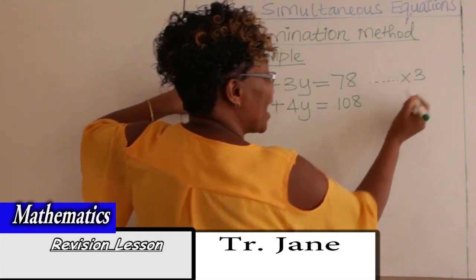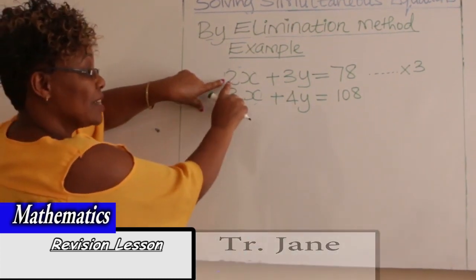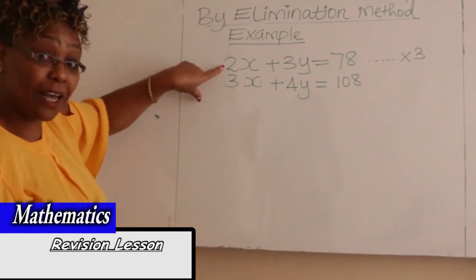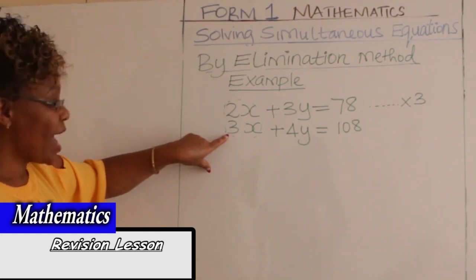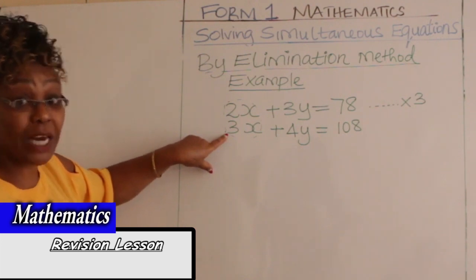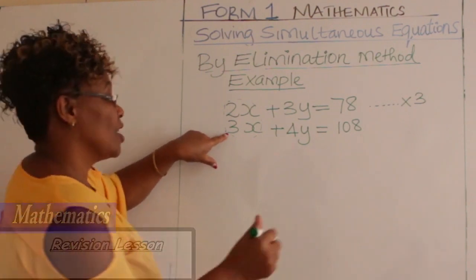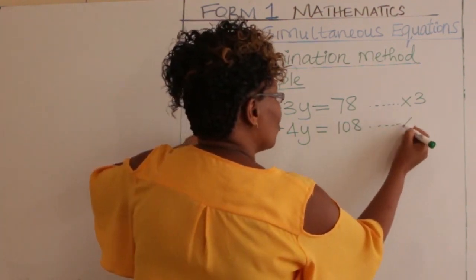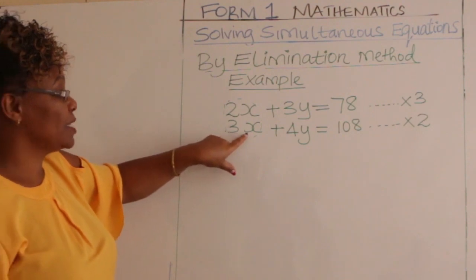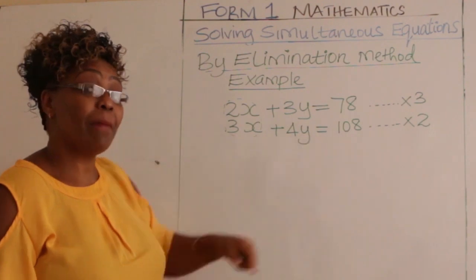You multiply the first equation by 3 — not only the x term, but every term by 3. For the second equation, to make 3x become 6x, you ask: what can we multiply 3 by to get 6? You multiply by 2. So every term in the second equation is multiplied by 2.